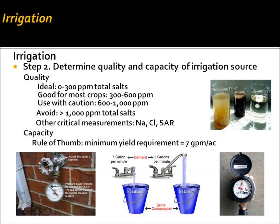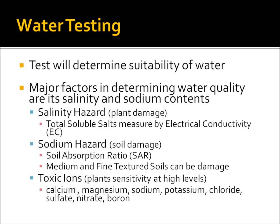It's important to determine the pressure of your water source and the flow rate in gallons per minute. If you're using a municipal water source, looking at your meter can be an easy way to determine your flow rate. It can also be a limiting factor because of meter size — if you need to utilize a lot of water, you may need a larger meter installed. Water testing is important in determining the suitability of water. Some major factors are salinity hazard, which is the electric conductivity of the water and indicates potential plant damage. Sodium hazard is determined by the sodium absorption ratio, which indicates potential damage to the soil by sodium. Toxic ions are also important, as some plants are sensitive to high levels.